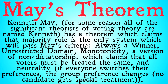So May's Theorem is going to go as follows. Kenneth May — because for some reason all the significant theorists in voting theory are named Kenneth — has a theorem which claims that majority rule is the only system which will pass May's criteria: always a winner, unrestricted domain, monotonicity, a version of non-dictatorship which claims that all voters must be treated the same, and neutrality. Neutrality means that if everyone switches their preferences — say Clinton on top and Trump second becomes Trump on top and Clinton second for everyone — then the group preference changes. There's no preferential treatment for a particular candidate. You might see this in a realistic situation with a yes-or-no vote requiring 60% to pass, where switching all yeses and noes would always result in a no.